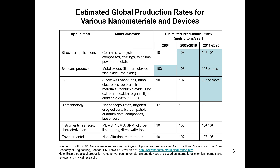Then we have integrated circuits and ICT applications. The materials include single-wall nanotubes, nano-electronic materials such as titanium dioxide, zinc oxide, iron oxide, and organic light-emitting diodes. Their production was estimated at 10 metric tons per year in 2004, rising to 10² metric tons per year from 2005 to 2010, and 10³ metric tons or more from 2011 to 2020.